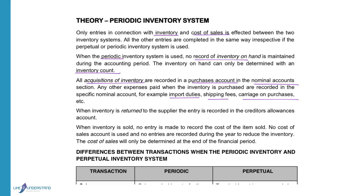When inventory is returned to the supplier, the entry is recorded in the creditors' allowances account. In the perpetual system, you don't have a creditors' allowances account. Both systems use a creditors' allowances journal, but when goods are returned using the perpetual inventory system, you will credit inventory. When you use the periodic system, you will credit creditors' allowances.